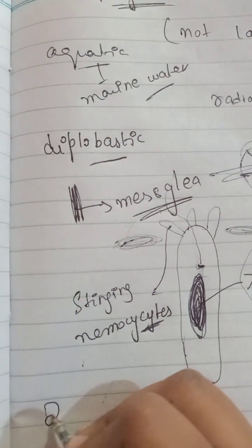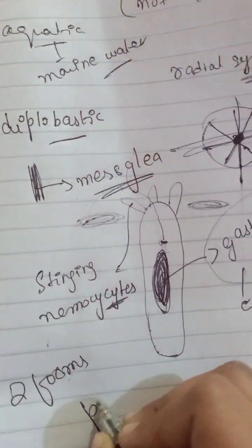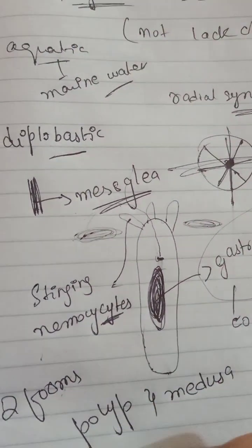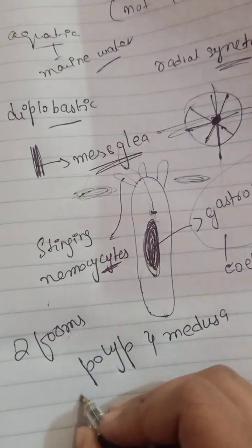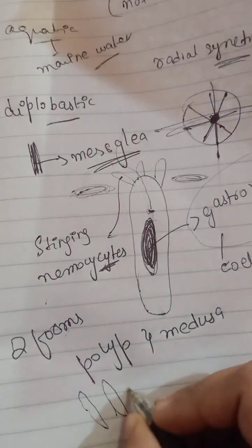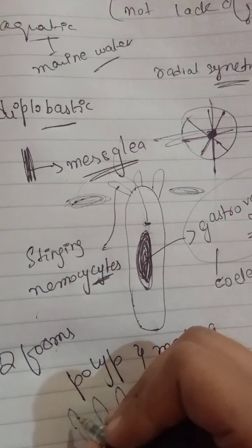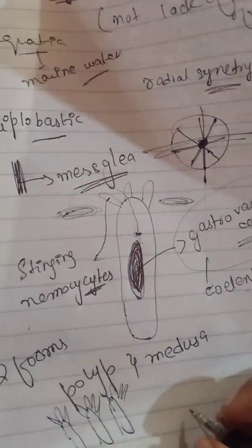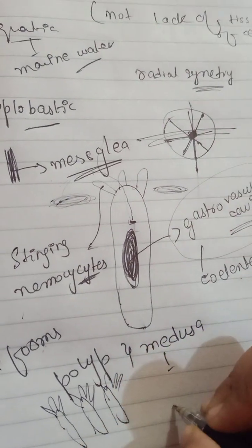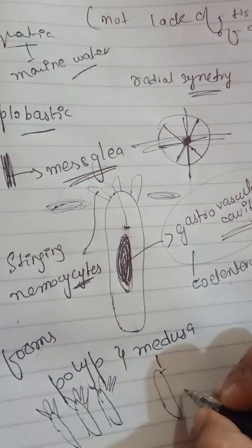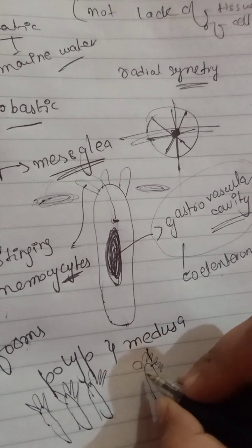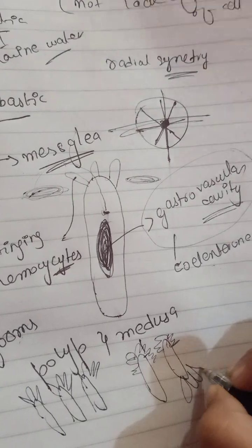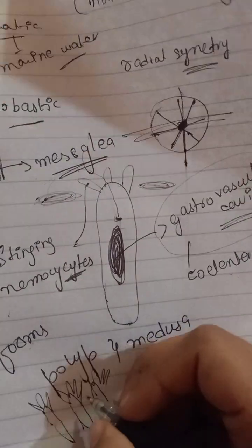Cnidarians basically have two body forms. The first is the polyp — what is polyp? It is a cylindrical-like structure having tentacles pointing upward. The second is medusa. The medusa body is umbrella-like in shape, and their tentacles point downward. That is the difference between these two body forms.